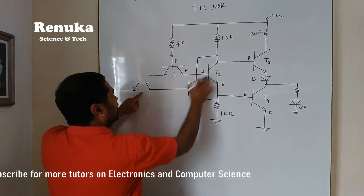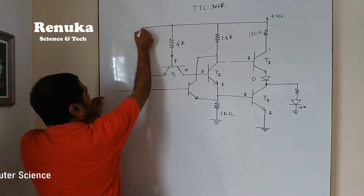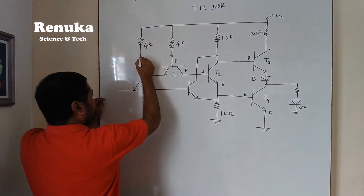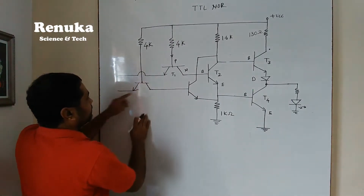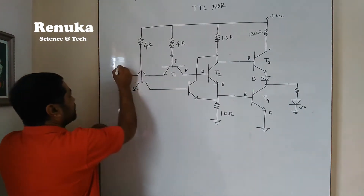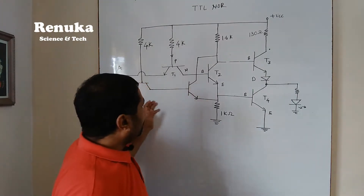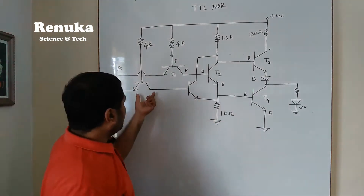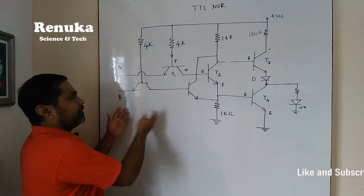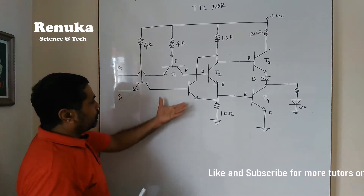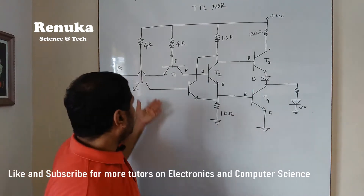In the same way that the 4kΩ resistor was connected to the base of T2, another 4kΩ resistor has to be connected there and that should be connected to the base of this new transistor. The emitters of both transistors will now form the inputs of this circuit — this will be input A and this will be input B. This is for a 2-input NOR gate only, but we can construct it for more inputs by making the same type of connections — connecting more parallel transistors with 4kΩ resistors.